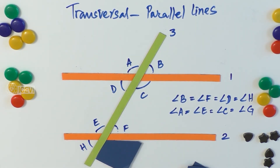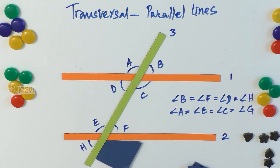When the lines are parallel, all of these properties hold for a transversal going through two parallel lines. We will see the other properties of the transversal in the final video on this topic.